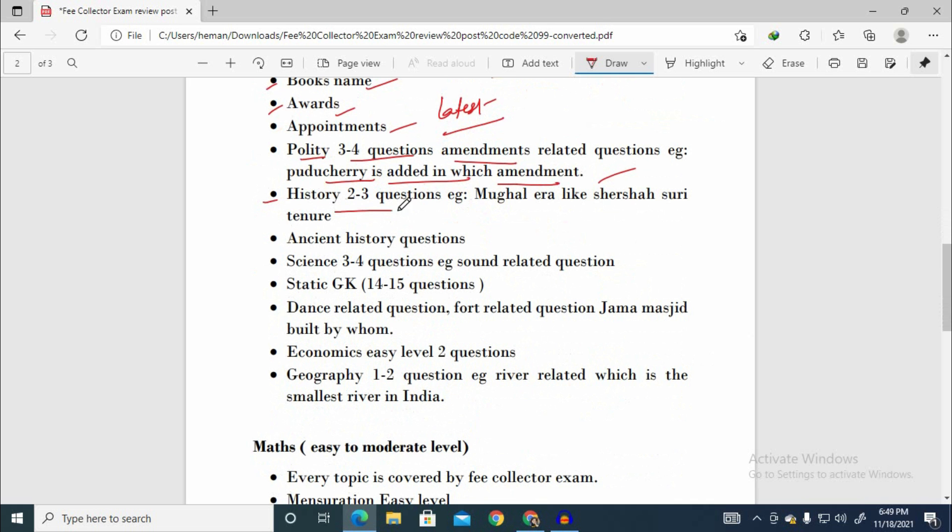History 2-3 questions. Mughal era or Mughal period questions were given - Sher Shah Suri period was asked. This was ancient history. Ancient history has 3 parts divided - ancient, medieval, and contemporary India.